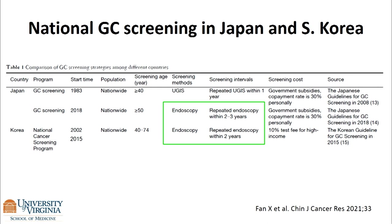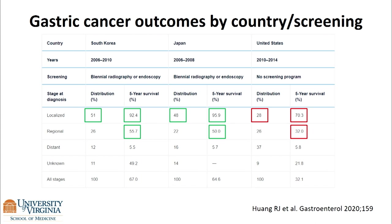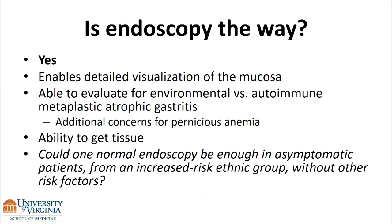From prior presentations, we know that in Japan and Korea, using endoscopy and screening every two years — in Japan the screening age has gone from 40 to 50 — more patients are diagnosed with local or regional, earlier stage gastric cancer, and patients actually survive better. So is endoscopy the way? Yes, I'm an advanced endoscopist — I believe I'm biased — but yes.